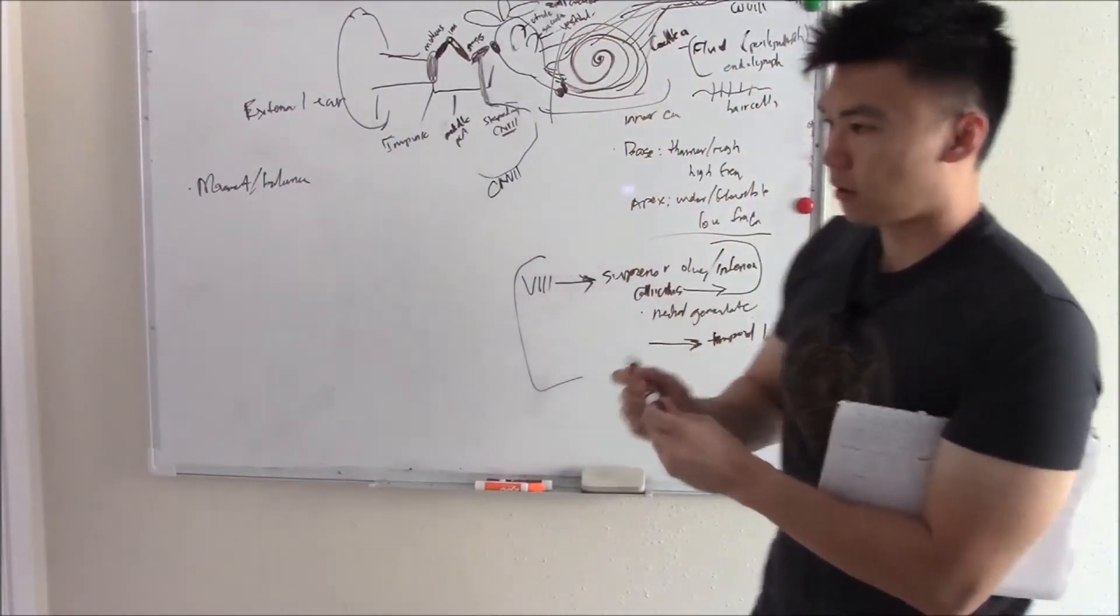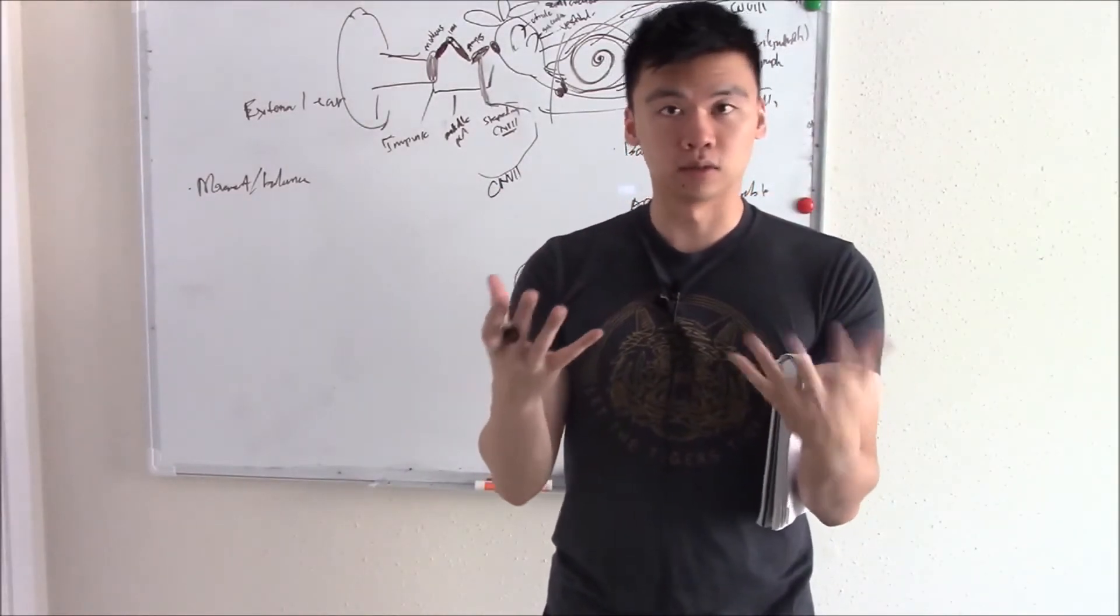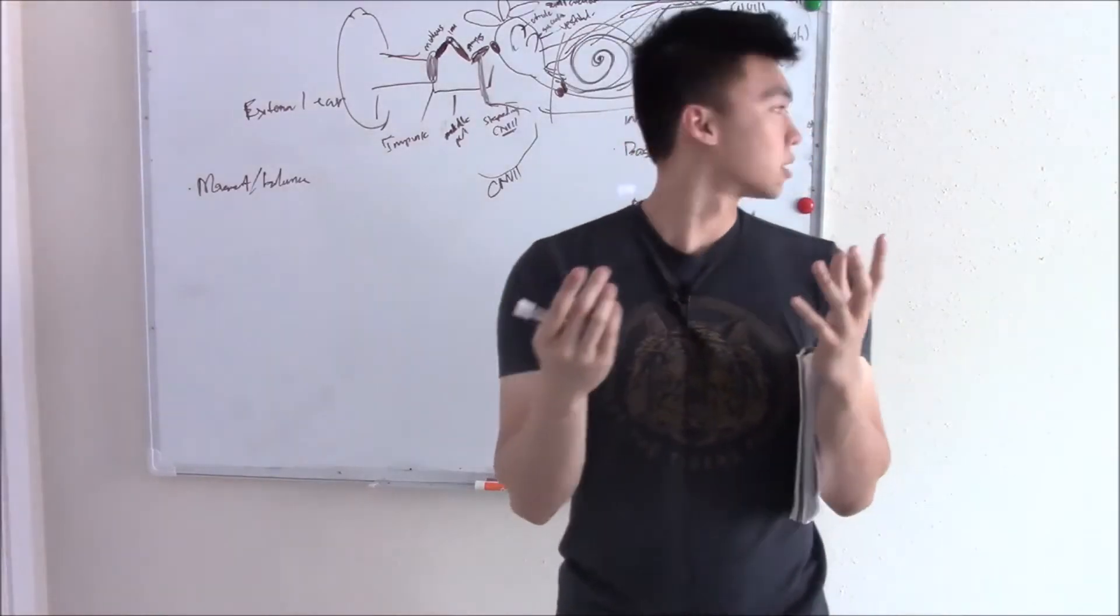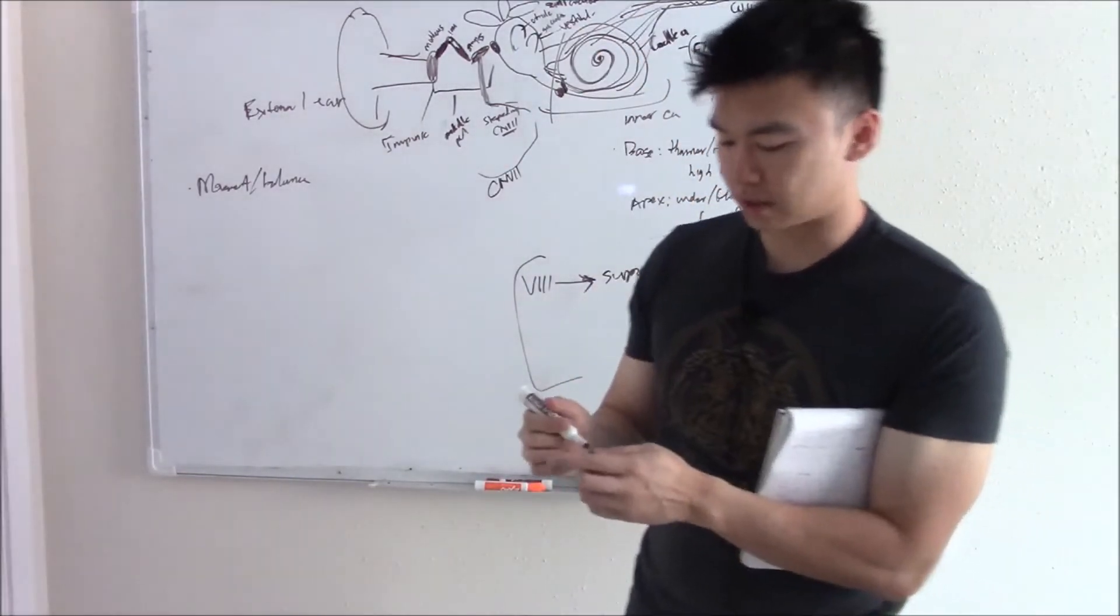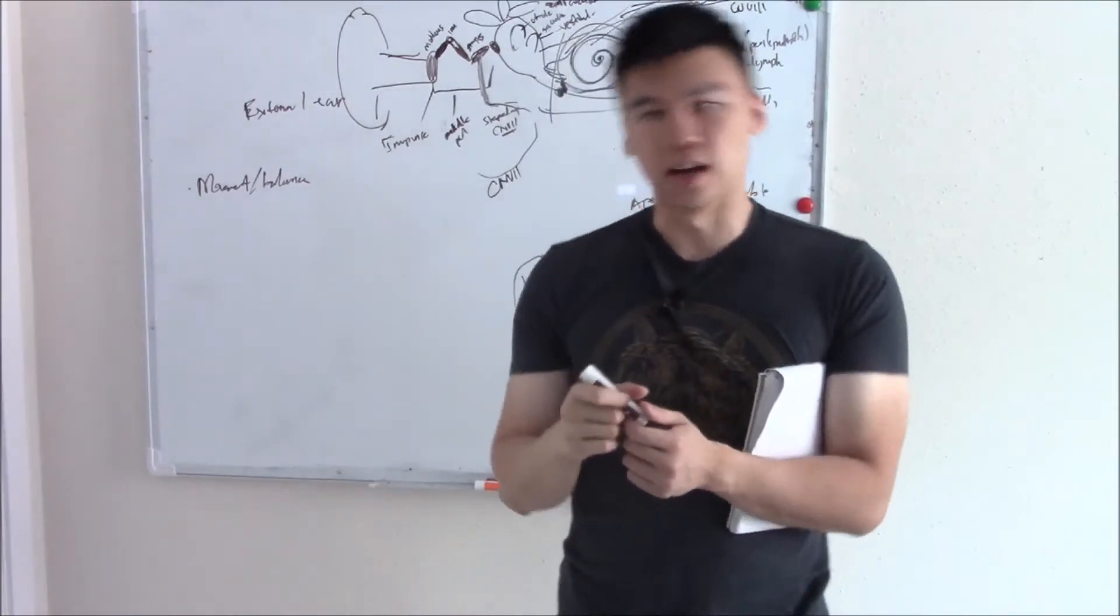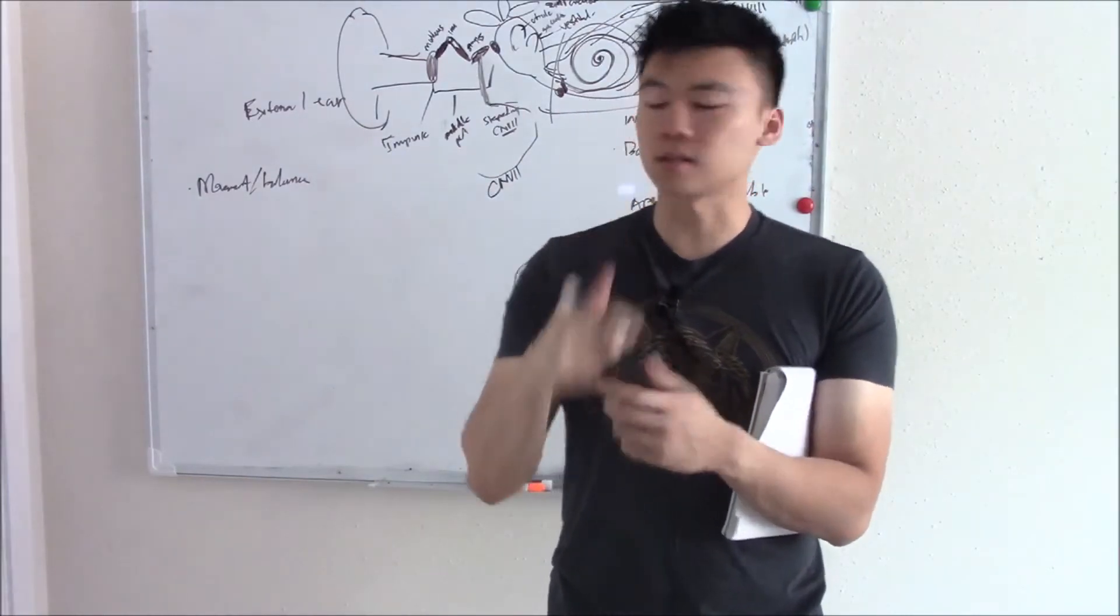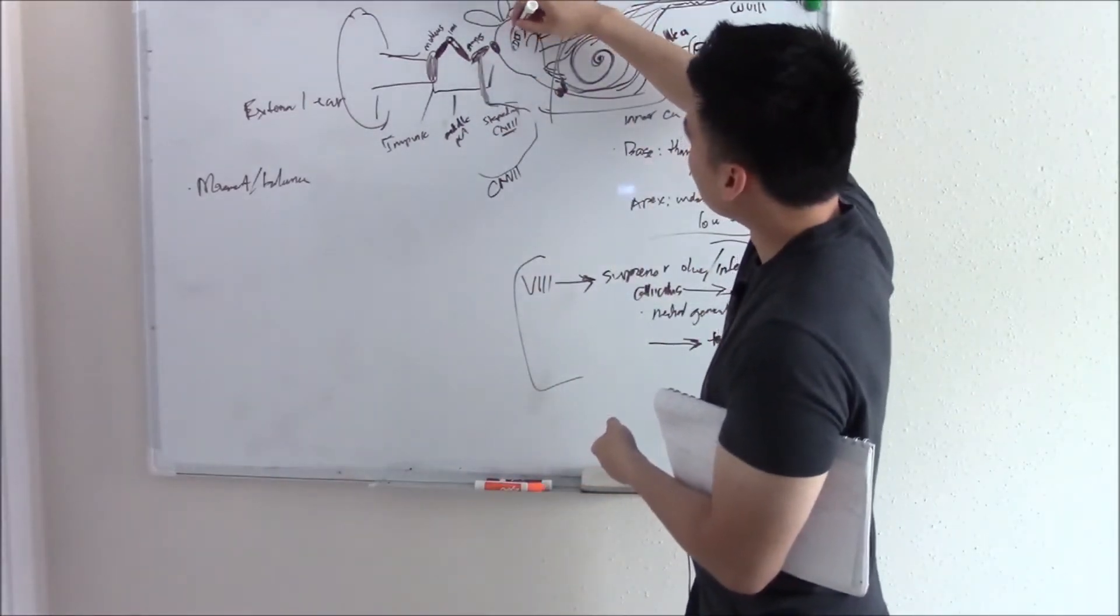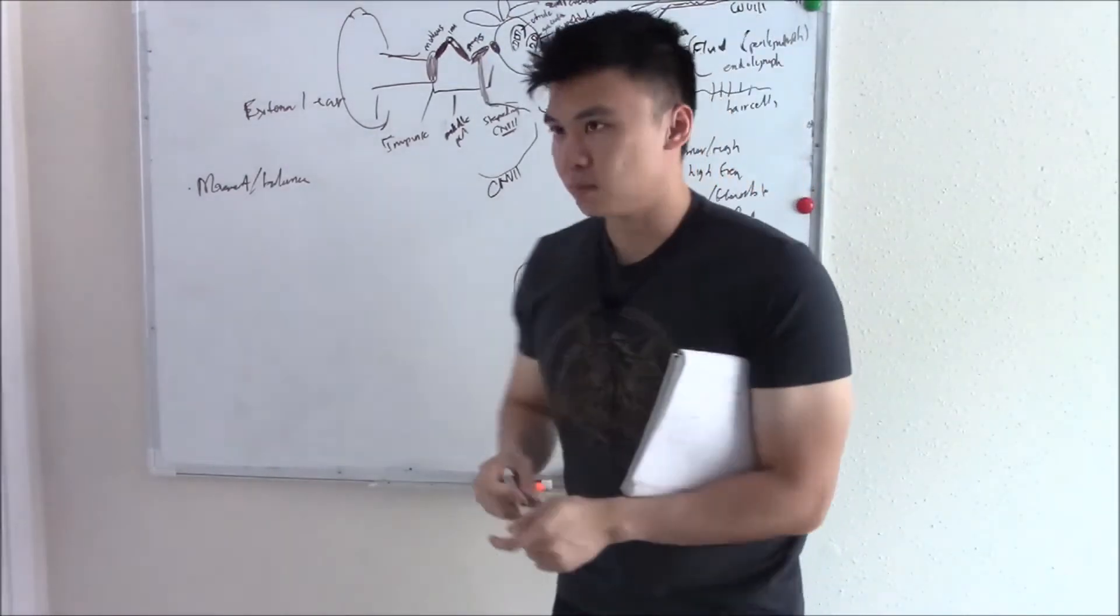So your semicircular canals are also filled with fluid. And when you move your head, that fluid will displace and you'll sense the movement and you'll need to balance yourself. And the reason why they're all orthogonal, all 90 degrees, is that way it allows you to move your head in any which way. And it's able to sense that movement, sense that balance. So that's your semicircular canals. What about your utricles and your saccules? They're also filled with fluid. They also have hair cells. But something that's important is that they have these little crystals. And when you move your head, the fluid will displace and the crystals will move and your hair cells will sense both the fluid displacement and those little crystals.